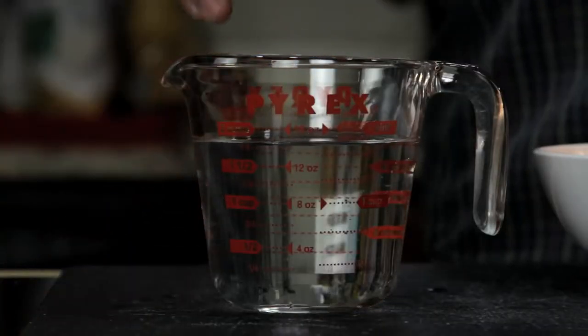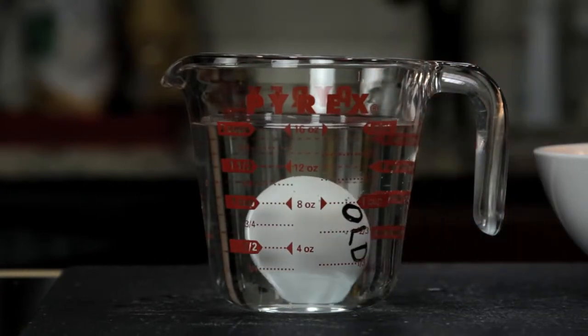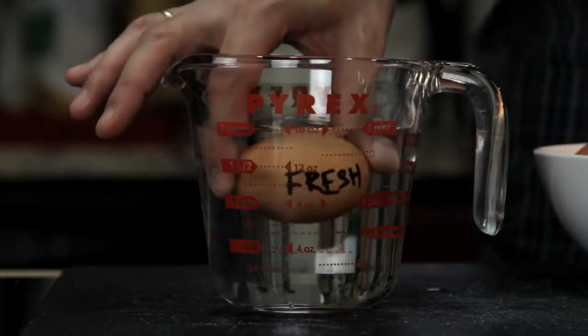You can also tell how fresh an egg is by carefully putting it into a cup of water. As an egg ages, the air pocket in the fat end is going to get bigger and bigger, which will make the egg stand upright, or sometimes even float. A really fresh egg will sink and lie flat on its back, like this.